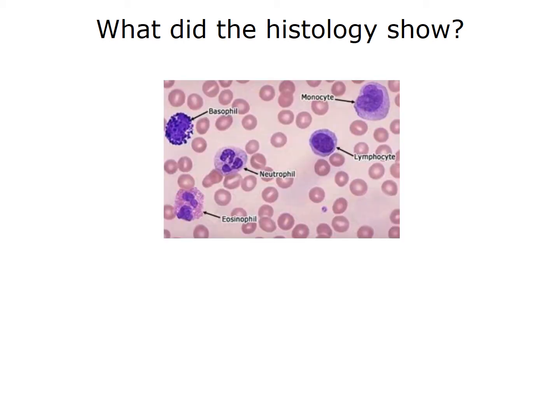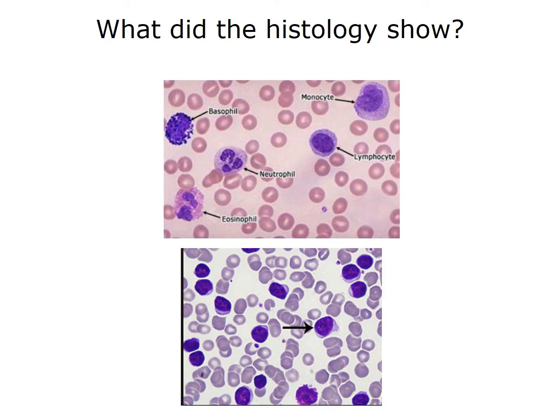Here is a blood smear prepared from a healthy patient. I want you to contrast this image to the second image, which is a blood smear prepared from a patient diagnosed with leukemia. There are obviously distinctions between these two blood smears, and it is obviously important to be able to make these distinctions. Making the distinction between normal and abnormal can be a very difficult task for a pathologist, because there can be a wide range of both normal and abnormal structure depending on what is being analyzed.